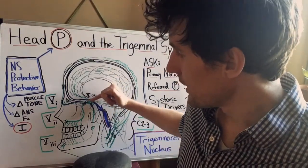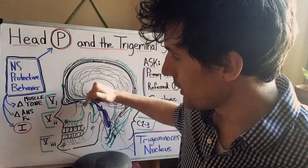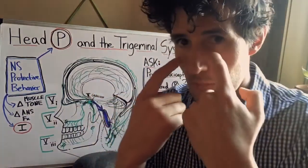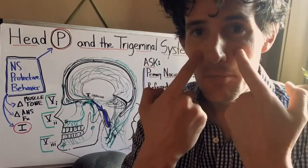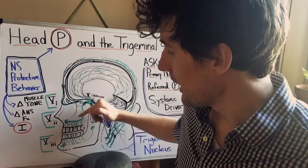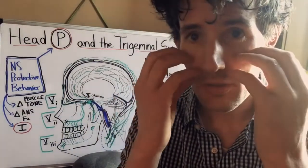Trigeminal two, it starts in the same place, perforates through the sphenoid and instead courses below the eyeball and then goes through the maxilla bone here. So it's called the maxillary nerve and it innervates the upper row of teeth, the maxillary sinus,